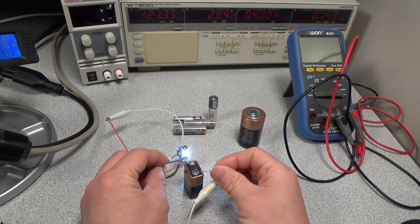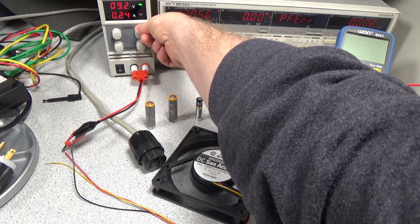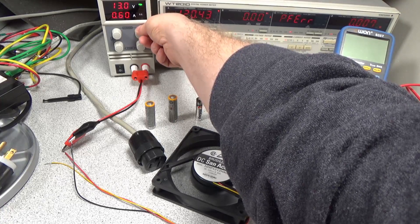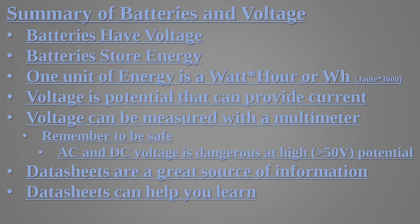Batteries store energy and have voltage. Voltage is a pressure that can be used to make current flow, which supplies power to your devices. The amount of time that current and voltage are present for is the energy. There's a lot more to batteries and voltage, but to get started, this is as much as you need to know.